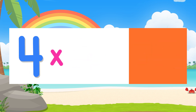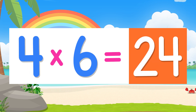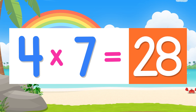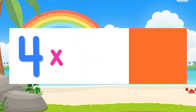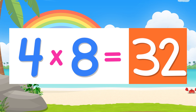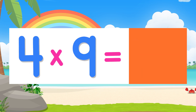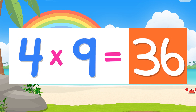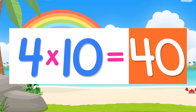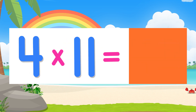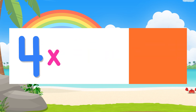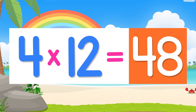Four times six is twenty-four. Four times seven is twenty-eight. Four times eight is thirty-two. Four times nine is thirty-six. Four times ten is forty. Four times eleven is forty-four. Four times twelve is forty-eight.